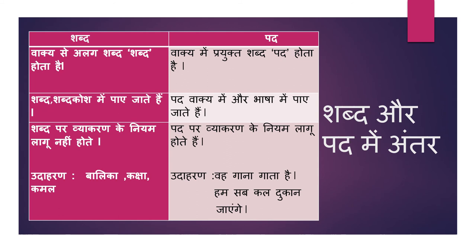For example, balika, kaksha, kamal — they are all Shabd. Here are examples of Pad: Vah gana gata hai. In this, all four words — vah, gana, gata hai — they are all Pad, because they are being used in a sentence. Ham sab kal dukaan jayenge. Again, individually they are all words, but because they are being used in a sentence, all the words are known as Pad.